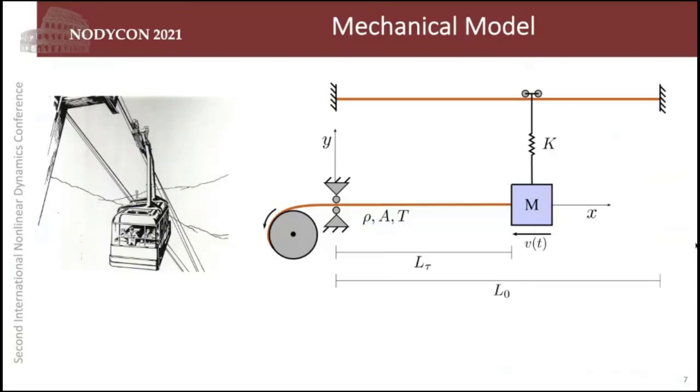In the left you can see a typical cable car illustration and we are going to model this system by this mechanical model, this idealization in the right. Our mechanical model is composed of two cables and one mass and one spring. The mass emulates the car. We consider this car as a lumped mass that you can see here in purple. And the two cables, the rail cable which supports the car and the pulling cable which pulls and induces the movement of the car are represented here.